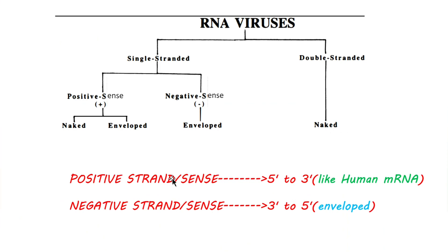RNA viruses can either be double-stranded or single-stranded. A double-stranded RNA virus is only one and it's naked. Single-stranded RNA viruses can either be positive sense or negative sense. Positive sense means it runs from 5' to 3', just like our mRNA. Negative sense is vice versa, from 3' to 5'. Importantly, negative sense RNA viruses are all enveloped, while positive sense RNA viruses include both naked and enveloped viruses.